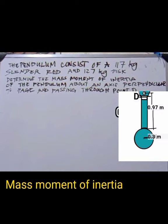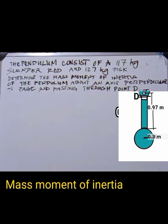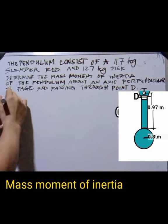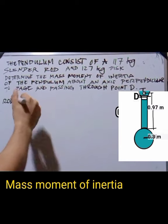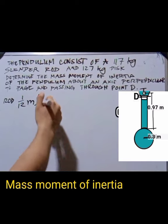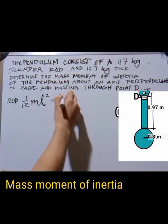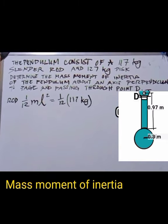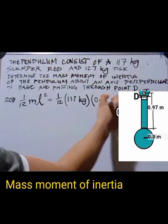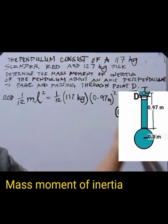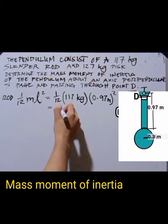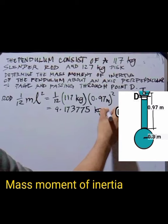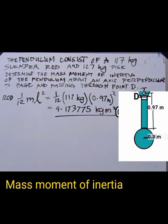A pendulum consists of a 117 kg cylinder rod and a 127 kg disc. Determine the mass moment of inertia of the pendulum about an axis perpendicular to the page passing through point D. For the slender rod, the formula is I = (1/12)mL². Substituting: (1/12) × 117 kg × 0.97² = 9.1738 kg·m².